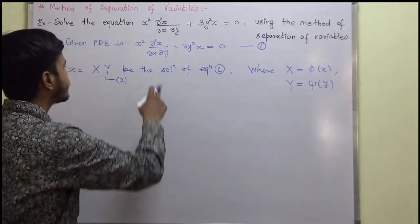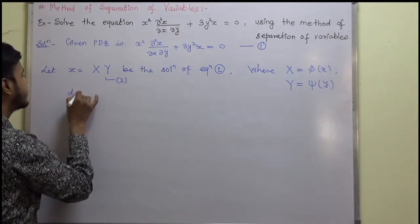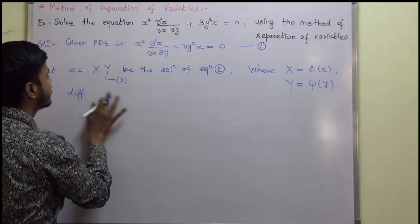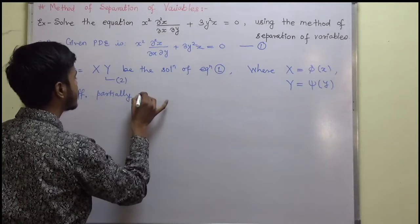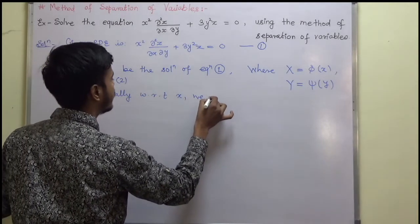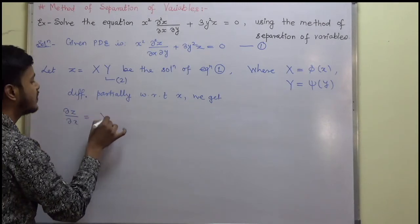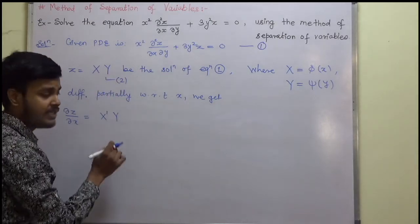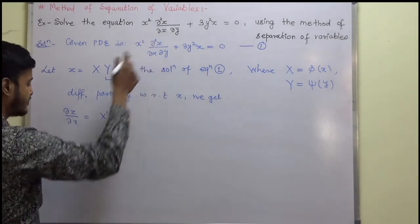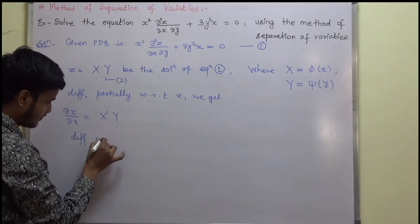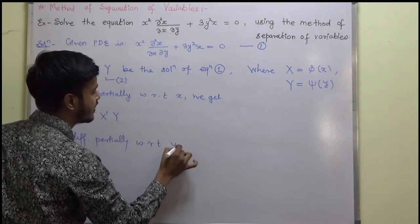We have z = X·Y and we want del²z/del x del y. Differentiating z partially with respect to x, we get del z/del x = X' · Y, since X and Y are independent — when taking the derivative with respect to x, Y is treated as constant.